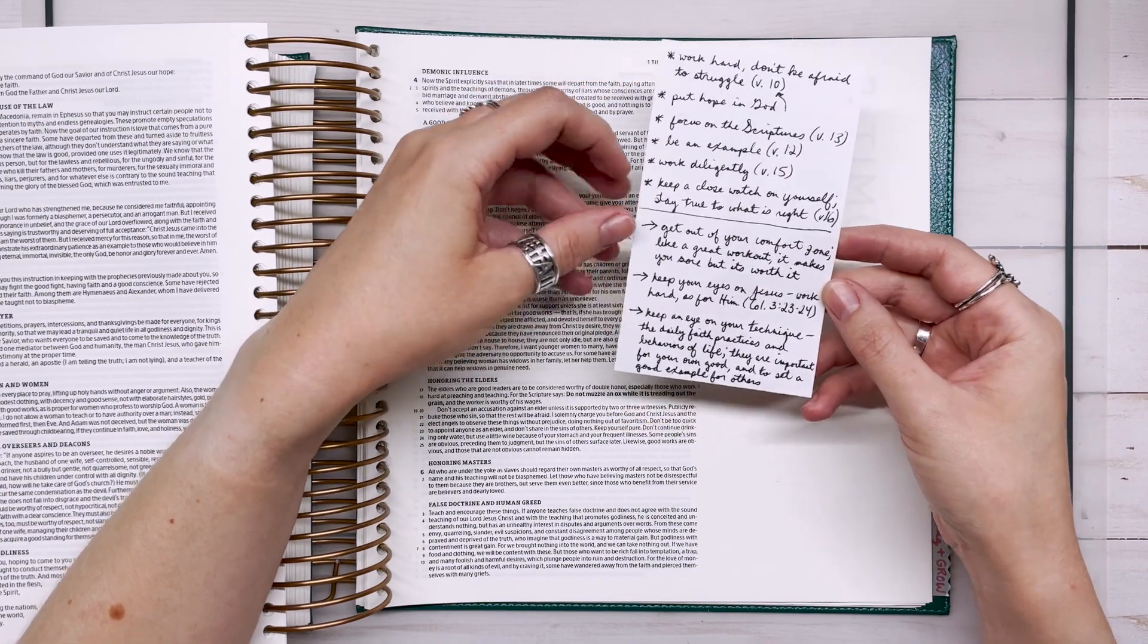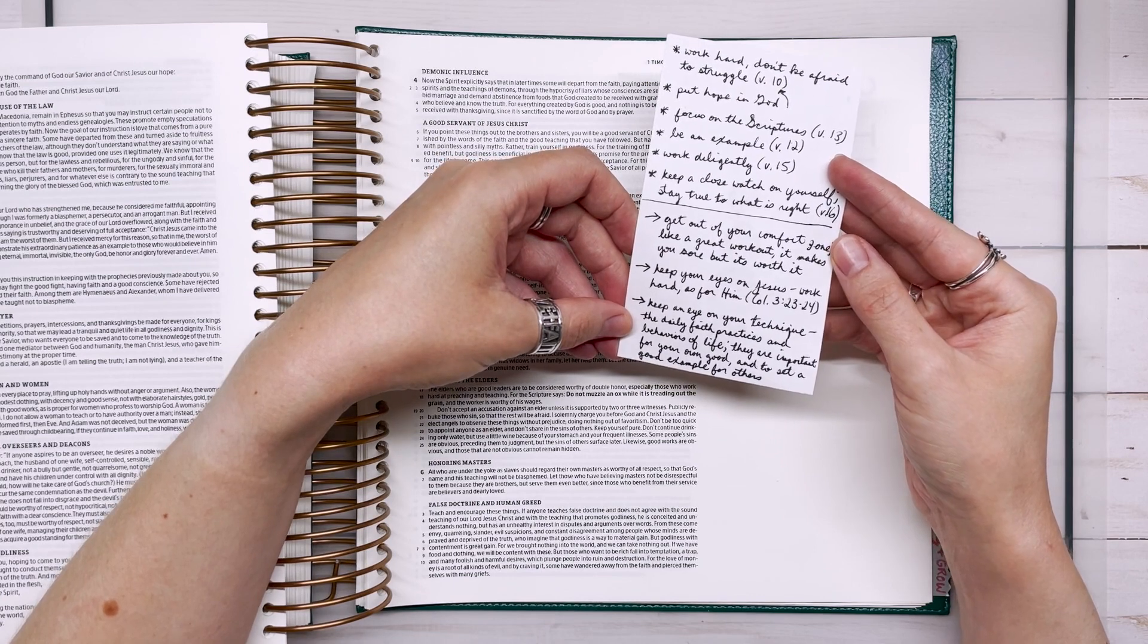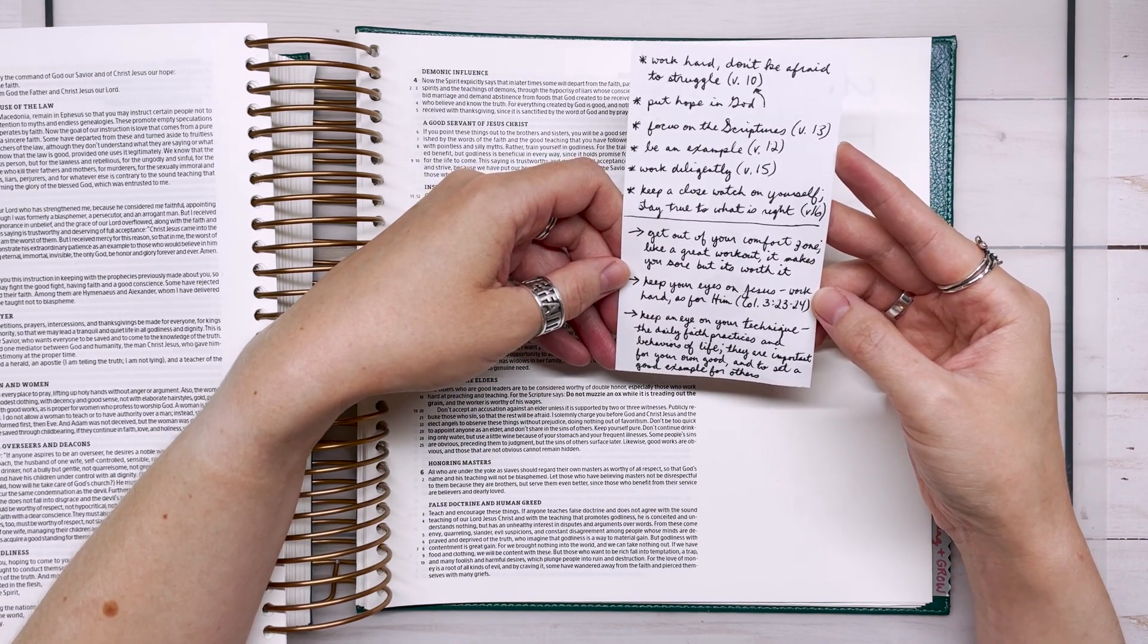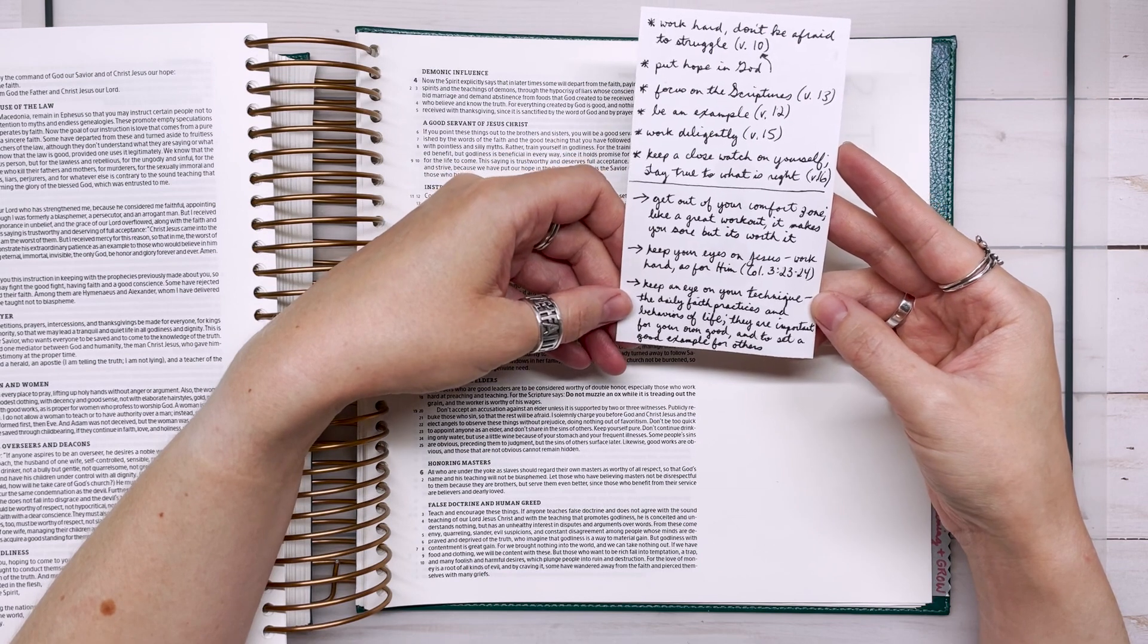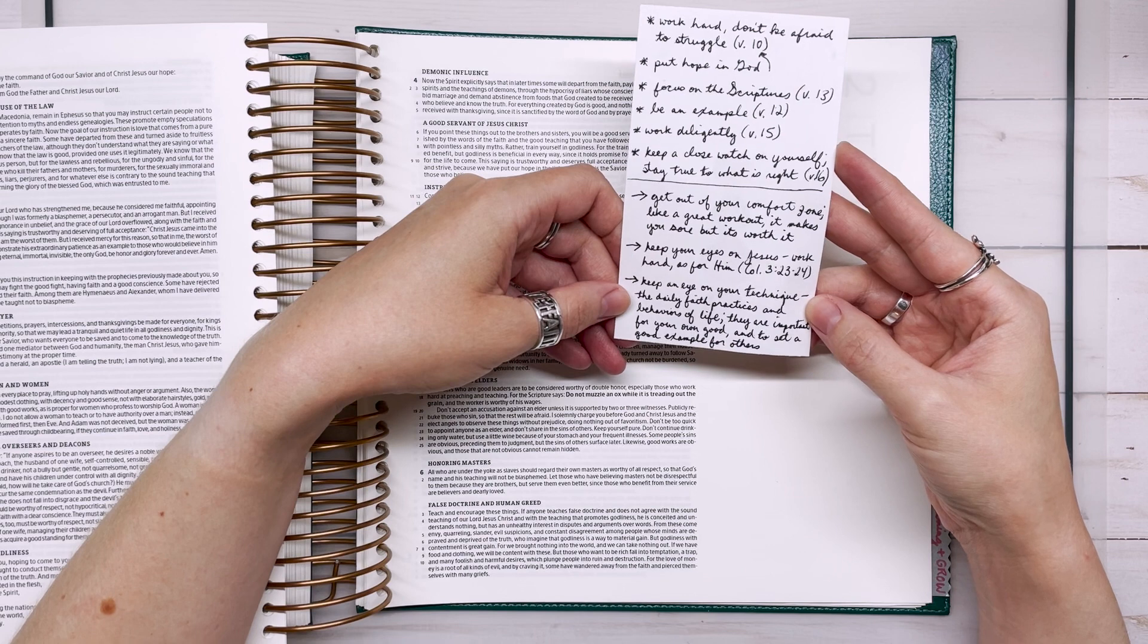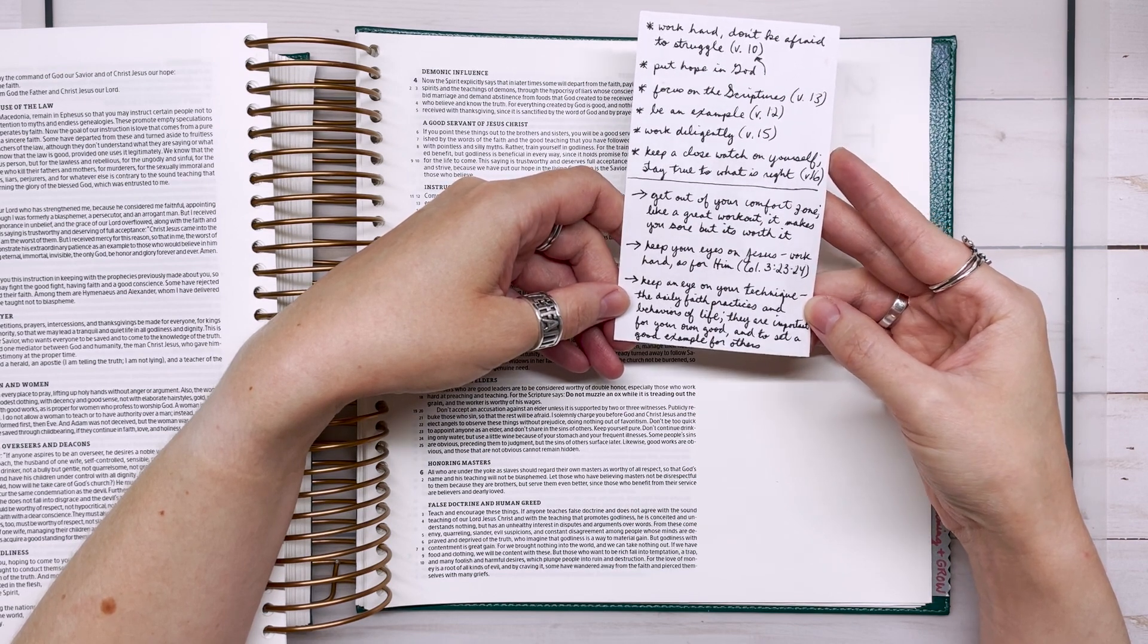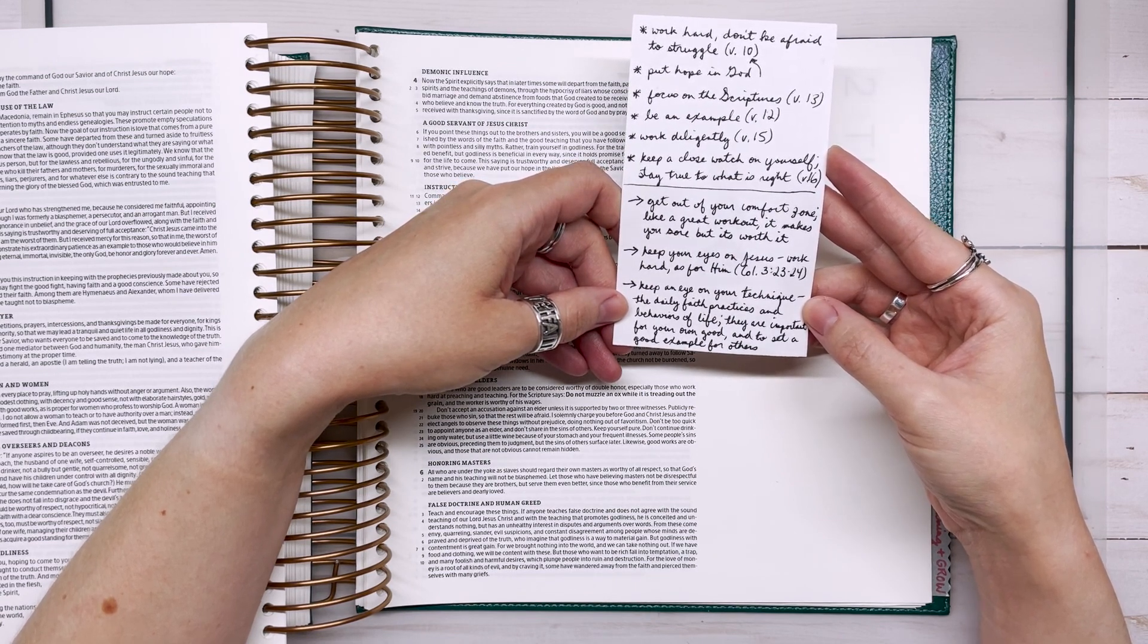And then I made a list at the bottom here that's kind of my personal practical takeaways based on sports and physical training. So just like in sport, you should get out of your comfort zone and like a great workout, it makes you sore, but it's worth it. And then keep your eyes on Jesus, of course. Work hard as for him. And then keep an eye on your technique. It's just like playing sports. Technique is so important in daily life. Your faith practices and behaviors, they're important to keep ourselves in check, but also to serve as an example for others.